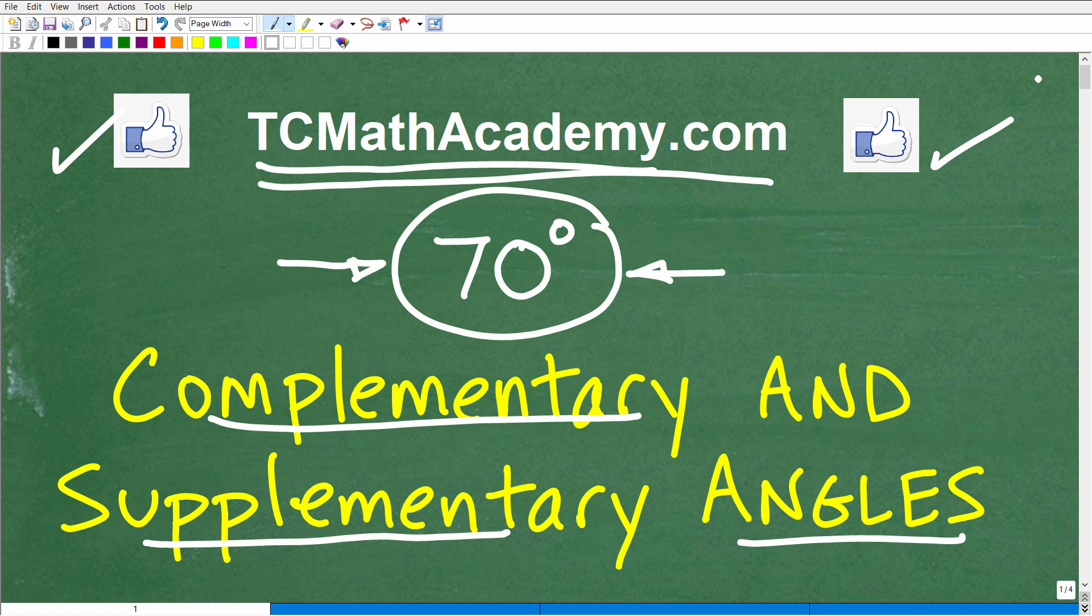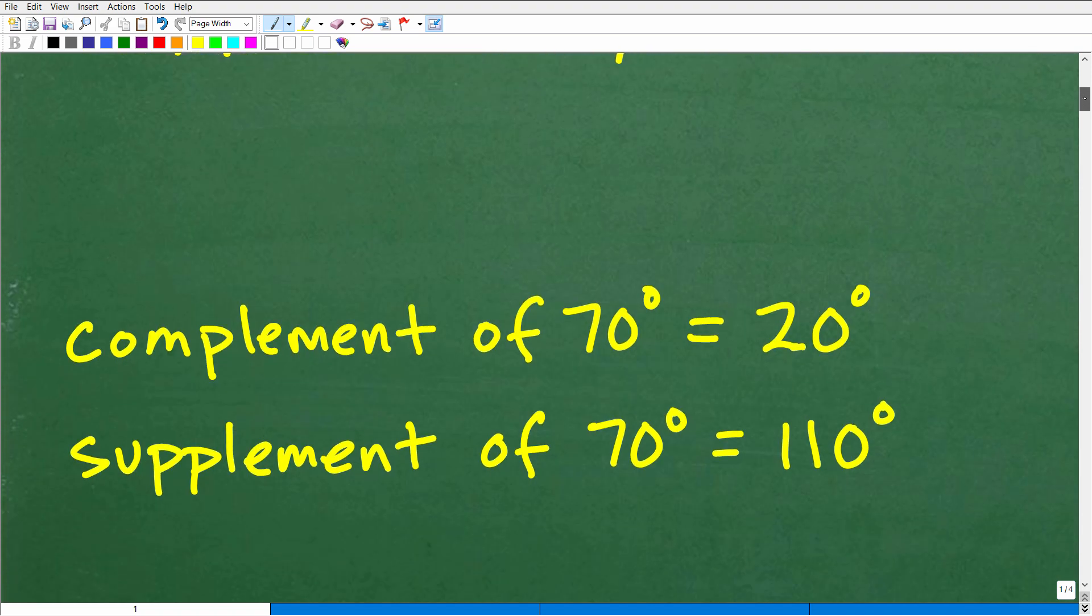Okay, so let's go ahead and take a look at the answers here. So again, we're talking about 70 degrees. We want to find the complement and the supplement of 70 degrees. The answer is the following: the complement of 70 degrees is 20 degrees, and the supplement of 70 degrees is 110 degrees.